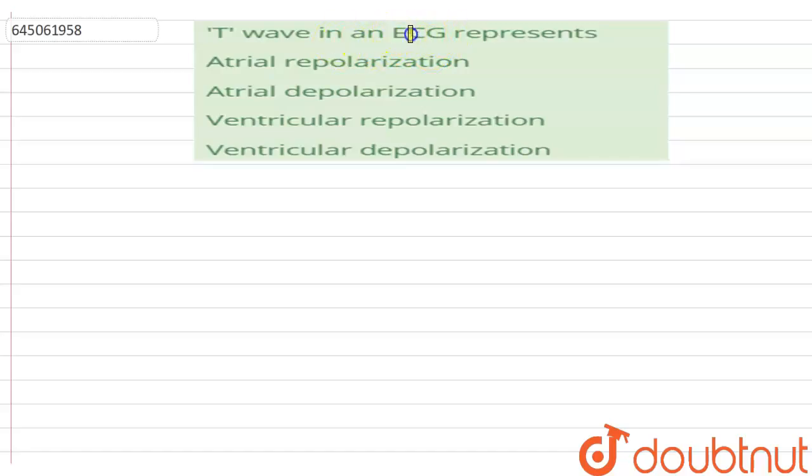T wave in an ECG, that is electrocardiography, represents what? The options are: atrial repolarization, atrial depolarization, ventricular repolarization, and ventricular depolarization.